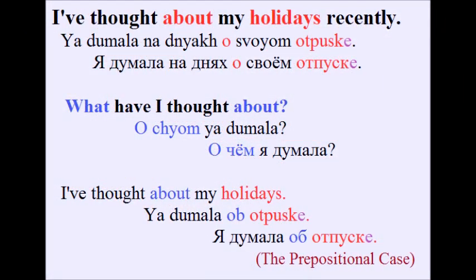I've thought about my holidays recently. The first thing we see here is the preposition 'about,' and as we know, this preposition is used in the prepositional case. Besides, if we look at the noun ending, it will prove our thought. The question we can ask is: what have I thought about? I've thought about my holidays. So in this sentence we used the prepositional case.